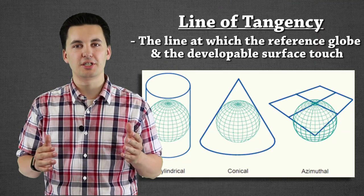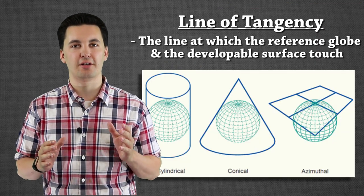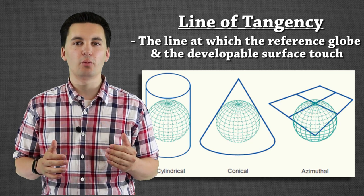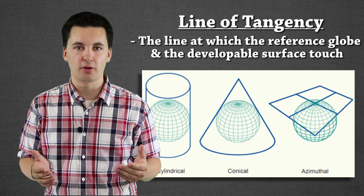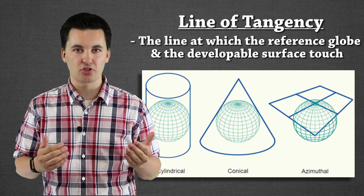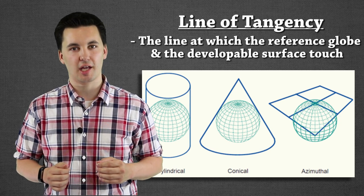Now before we get into the three different developable surfaces, we have to understand what a line of tangency is. This is when we have our reference globe and it's going to touch our two dimensional surface. The area where we're seeing the interaction occur, that's going to be this line of tangency.